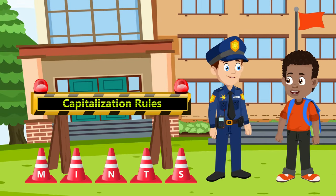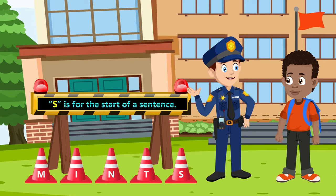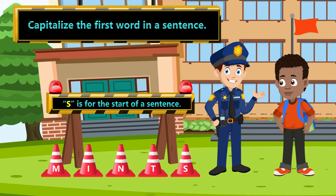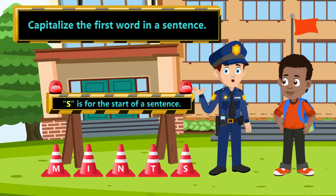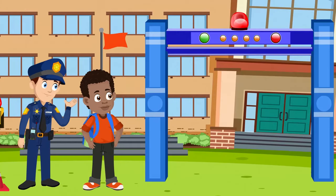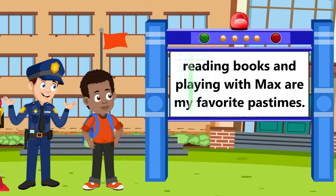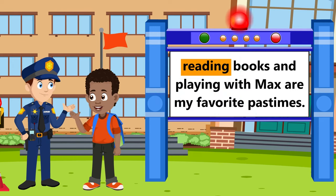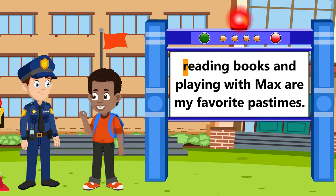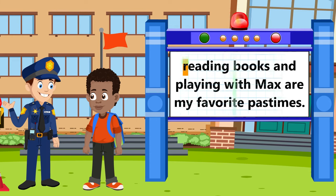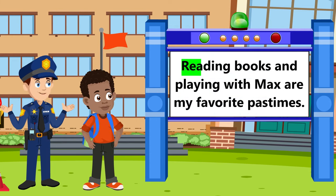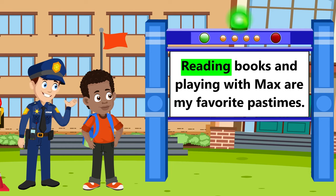What does S stand for? S is for the start of a sentence. Capitalize the first word in a sentence. That's our last rule. Let me give you an example: Reading books and playing with Max are my favorite pastimes. We must capitalize the first letter, mustn't we, Cooper? Yes, we must, Matt. Our sentence will then look like: Reading books and playing with Max are my favorite pastimes.